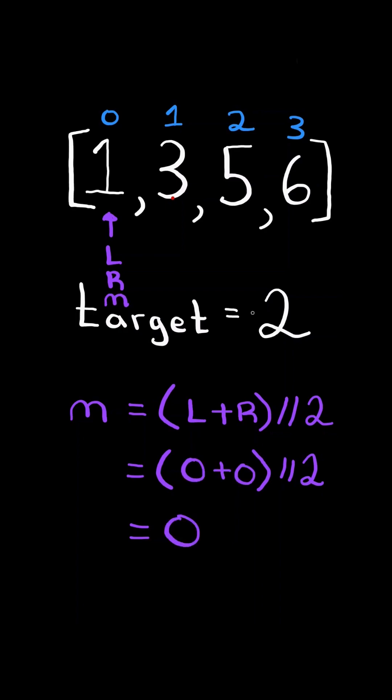We calculate the midpoint between L and R, and if the value at mid is less than target, then we know target cannot appear to the left of mid because all these numbers are less than target. So in this case, we update L to mid plus 1.